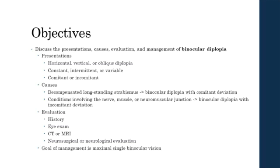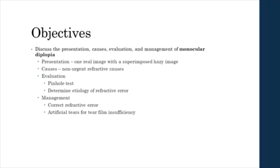Evaluation of binocular diplopia includes a careful history and eye exam and may require CT or MRI imaging as well as neurosurgery or neurological evaluation for life-threatening causes. The goal of managing binocular diplopia is achieving maximal single binocular vision. Monocular diplopia presents as one real image with a superimposed hazy image and most often results from non-urgent refractive causes. Evaluation should begin with a pinhole test, followed by determination of the etiology of refractive error. Monocular diplopia can be treated with correction of refractive error or the use of artificial tears if the cause is tear film insufficiency.